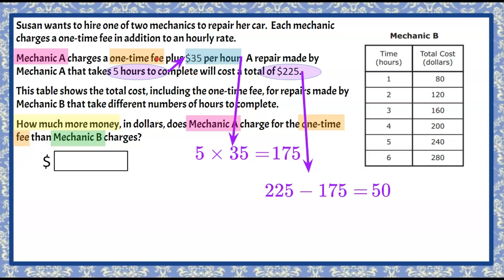So now we can say that Mechanic A has a one-time fee of $50, plus five hours at $35 per hour, for a total of $225. What this means is the mechanic is going to charge you a flat fee of $50 just for looking at the car, and then in addition to that $50 fee, they're going to charge you $35 per hour of work.